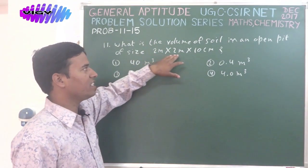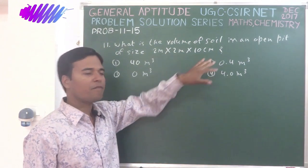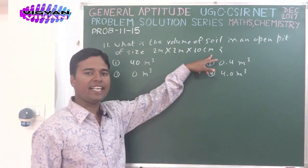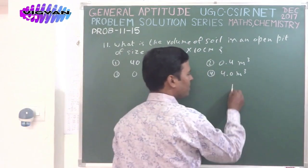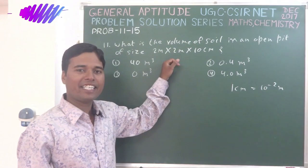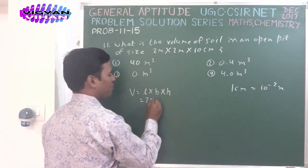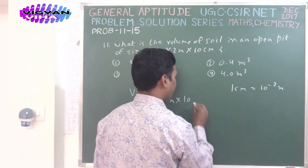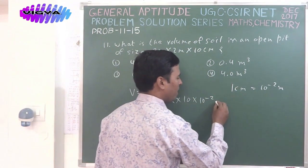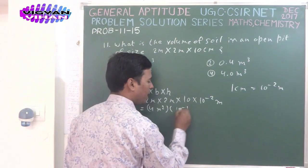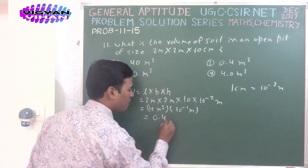We notice here the units are in m and m, but the third dimension is in cm. In all 4 options the unit is m³, so first we will have to change the cm to m. We know that 1 cm is equal to 10⁻² m. The volume of the rectangular pit is length × breadth × height: 2 m × 2 m × 10 cm, where 10 cm becomes 10 × 10⁻² m. That gives 4 m² × 10⁻¹ m, which equals 0.4 m³.